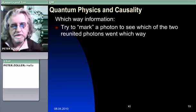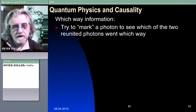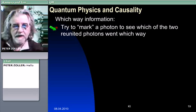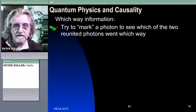So, now people were interested. I said Marlon Scully is the author of this experiment, and this experiment was later performed in Berkeley. And they were interested in the following thing: try to mark a photon to see which of the two reunited photons went which way.